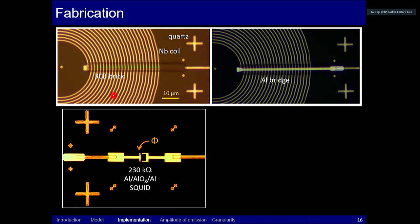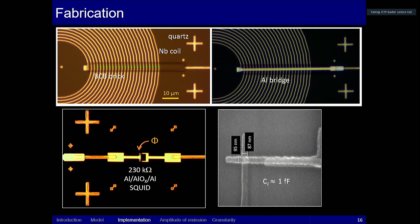A bit more details. You see that we have to connect the inside of the spiral coil to the outside, and for this we deposit a brick of plastic on top of which we make an aluminum bridge. Here you see the detail of the SQUID with one of the two junctions smaller than 100 by 100 nanometer and with a capacitance of one femtofarad.